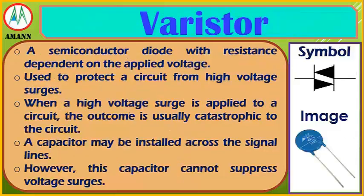Varistor: a semiconductor diode with resistance dependent on the applied voltage, used to protect a circuit from high-voltage surges. When a high-voltage surge is applied to a circuit, the outcome is usually catastrophic to the circuit. A capacitor may be installed across the signal lines; however, this capacitor cannot suppress voltage surges.